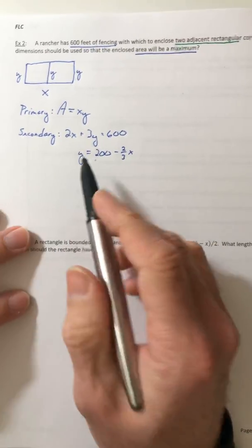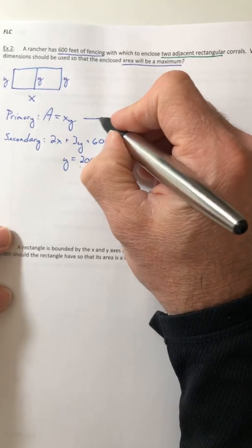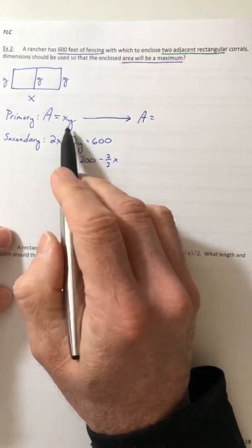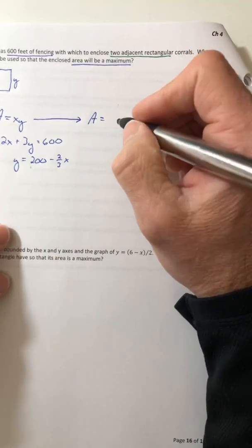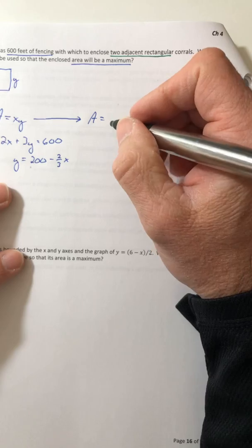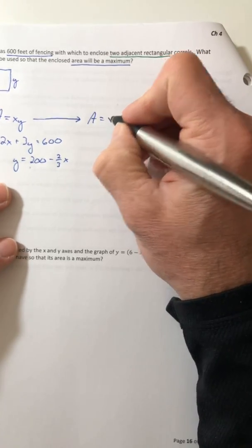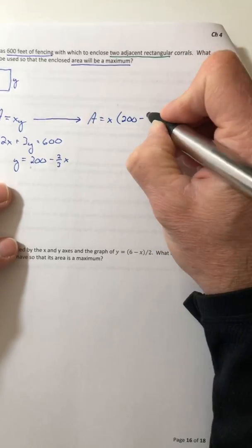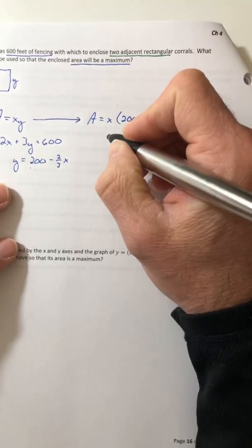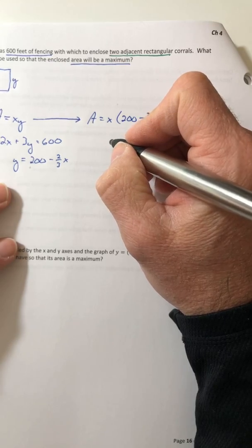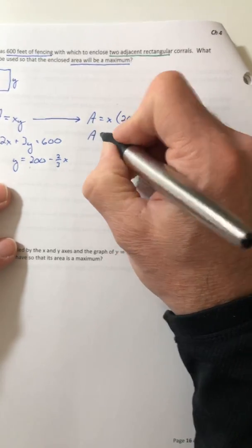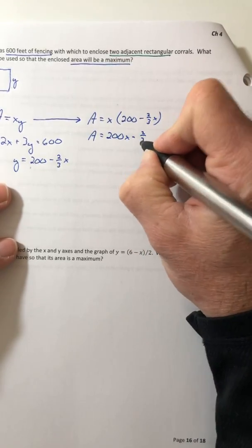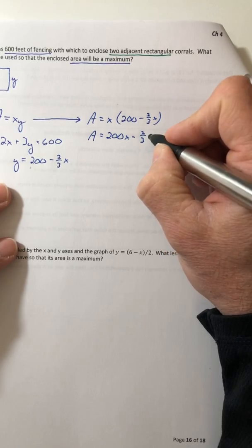Well, now that you know what Y is, you're going to set it back up into the primary because we want our function to be just in terms of one variable because then the derivative is going to be easier to calculate. So plug in the Y and let's go ahead and distribute.